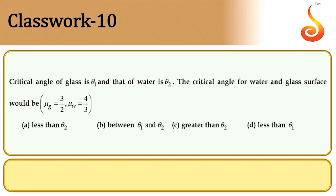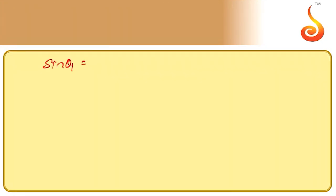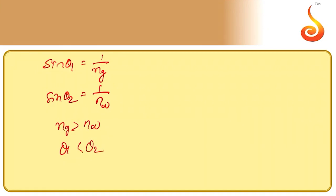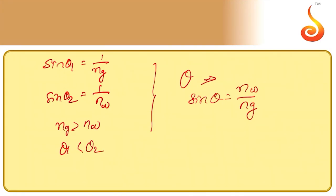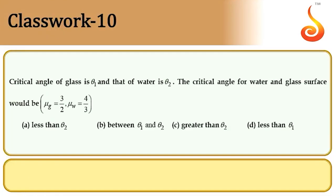Example 10: Critical angle of glass is θ1 and that of water is θ2. We have sin θ1 = 1/n_g and sin θ2 = 1/n_w. Since n_g > n_w, θ1 < θ2. The critical angle for the glass-water surface satisfies θ1 < θ < θ2, making option C correct.